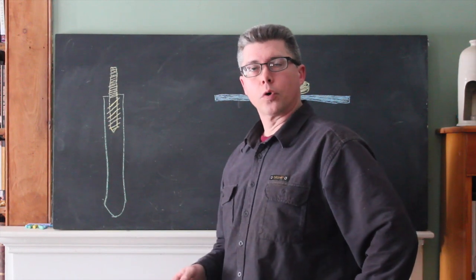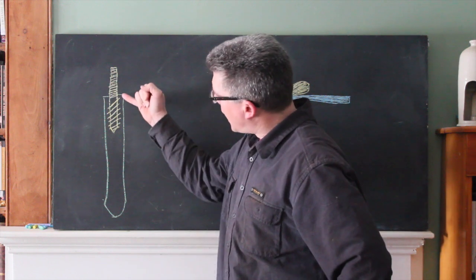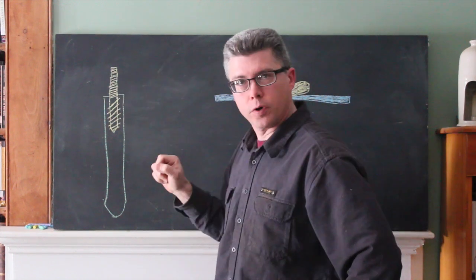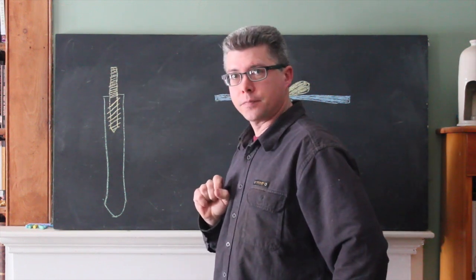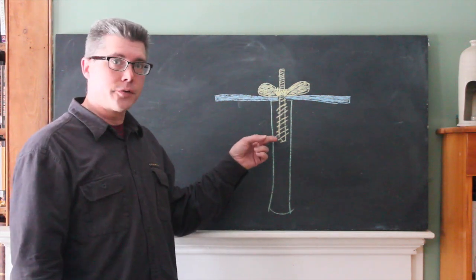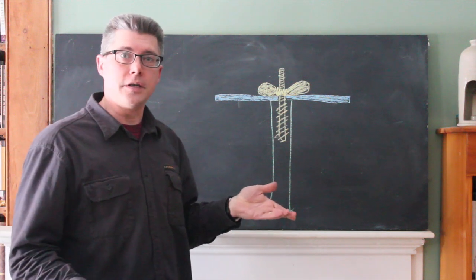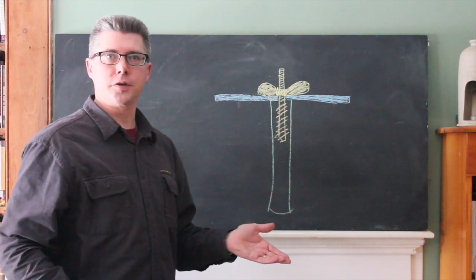A hanger bolt works on a principle similar to that of the threaded insert. On one side are threads that can screw into a piece of wood, and on the other end are normal bolt threads. That way, after you have inserted the hanger bolt into a piece of wood, you can use a wing nut or other convenient attachment to put this piece on a cross piece, for example.